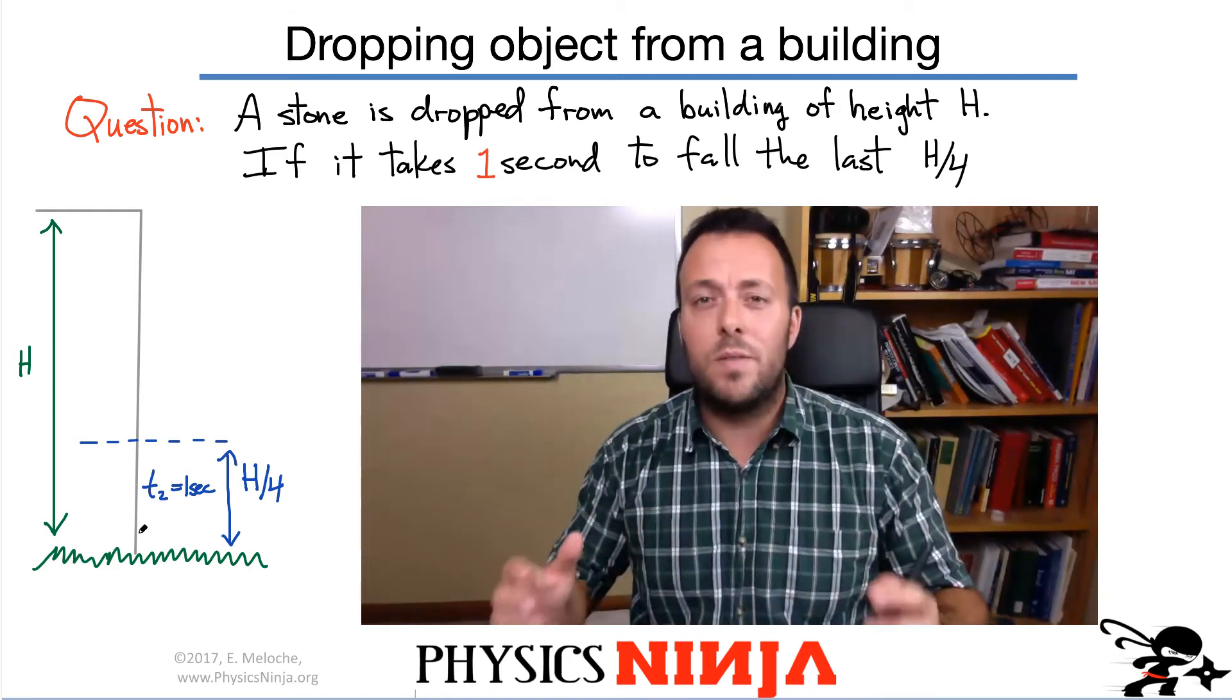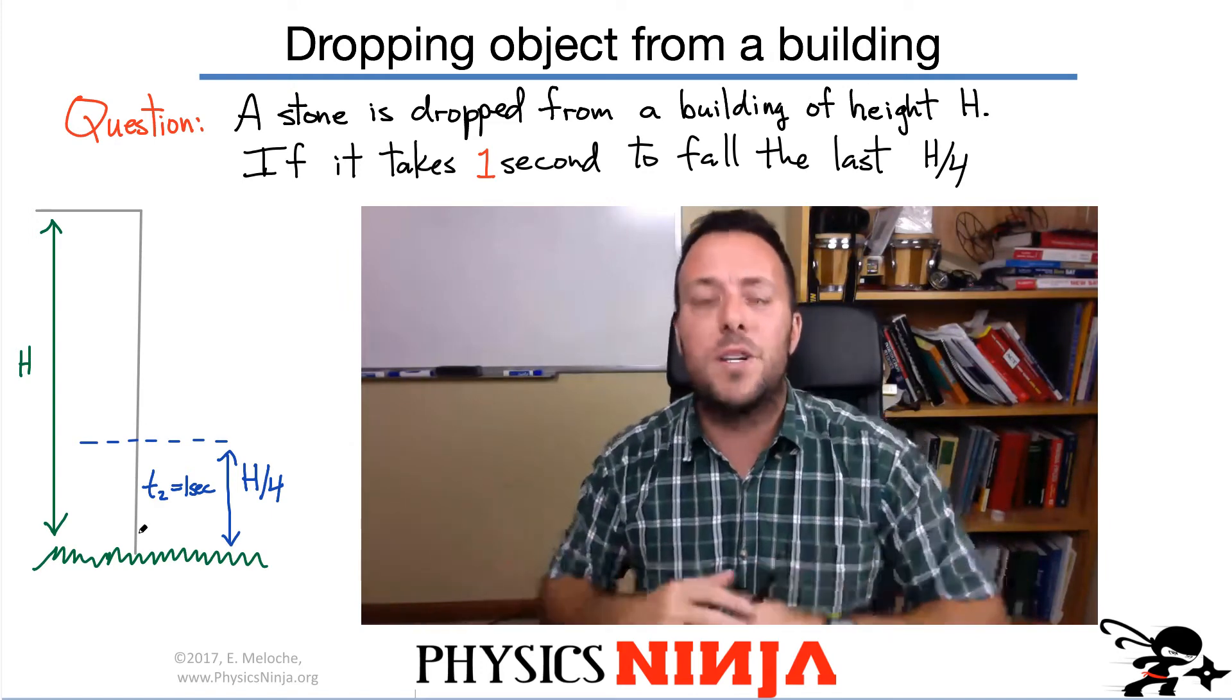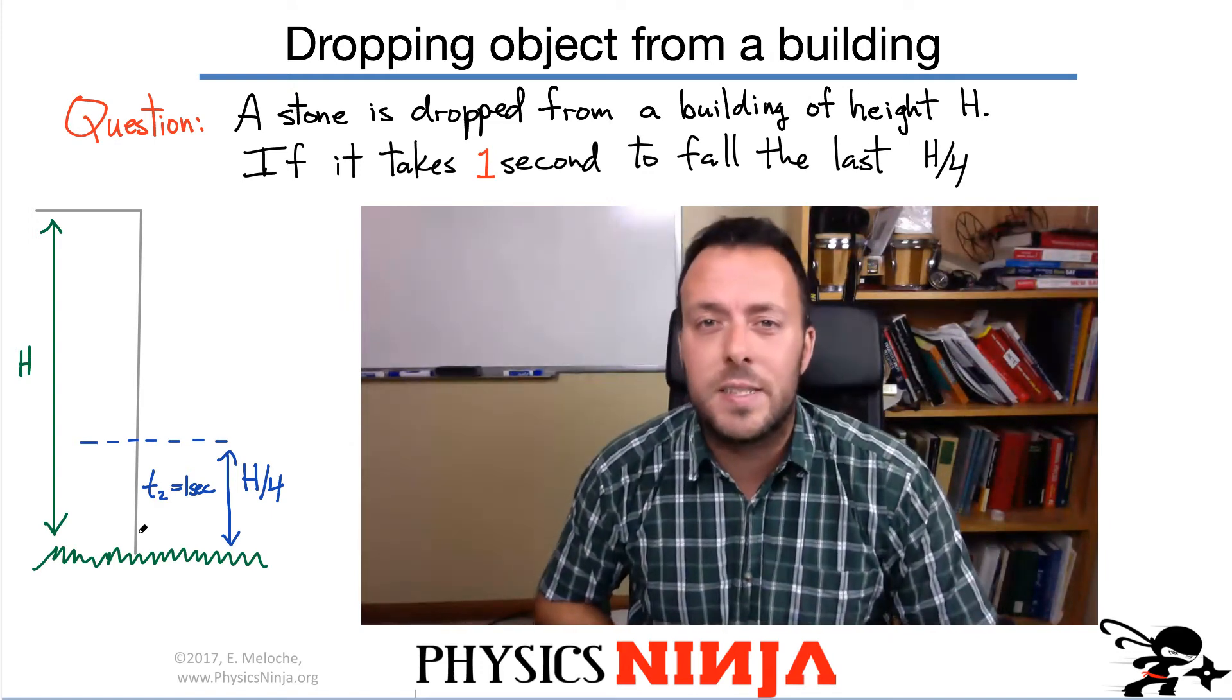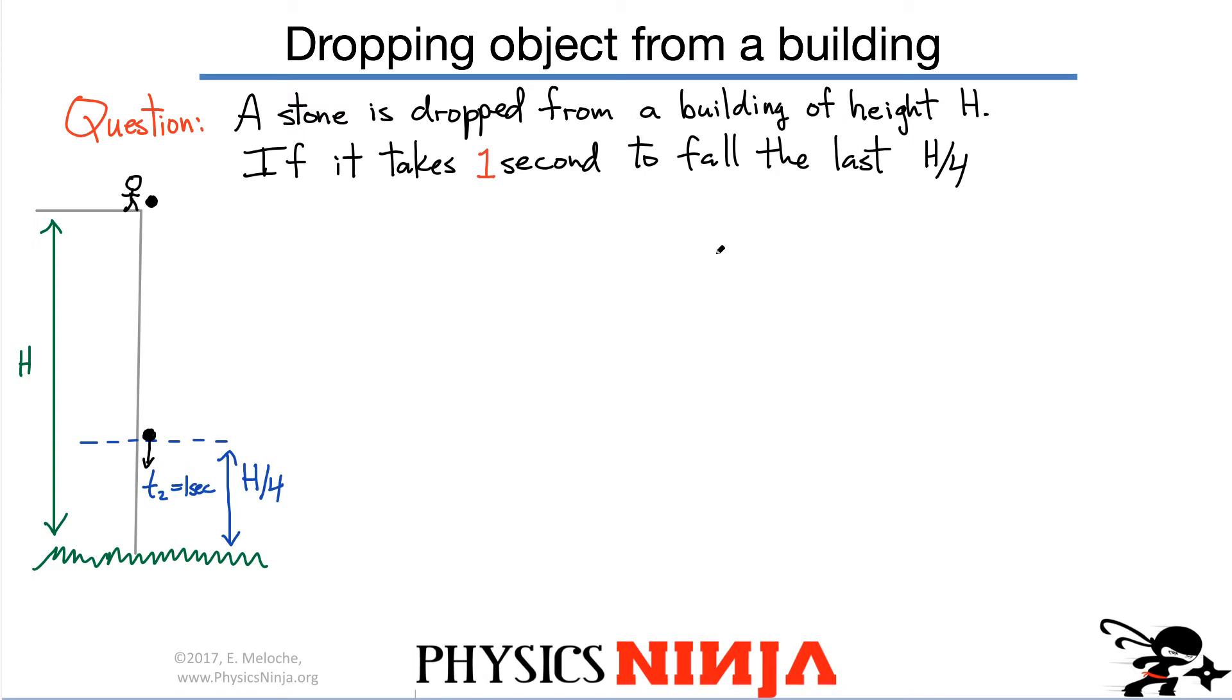So try this problem out for yourself. Then come back and watch the video once you have your solution. And let's compare answers. Okay, so here's the problem. So I dropped the stone. So automatically I know that the initial velocity is zero meters per second.